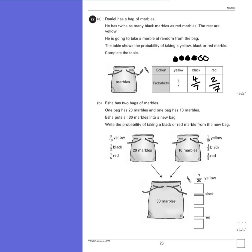In Part B, Escher has 2 bags of marbles. One bag has 20 marbles. One bag has 10 marbles. Escher puts all 30 marbles into a new bag. Write the probability of taking a black or red marble from the new bag. What we need to do is work out how many of each coloured marble there are, which will tell us how many marbles there are in total and therefore what's the probability of choosing that marble.